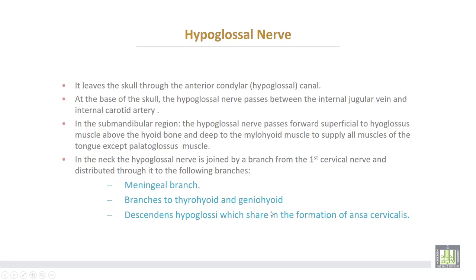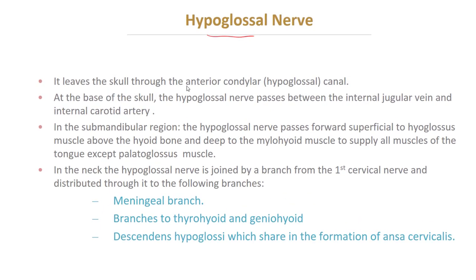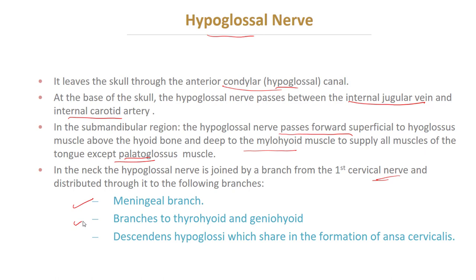The hypoglossal nerve is the twelfth cranial nerve. It leaves the skull through the anterior condylar canal, or hypoglossal canal. At the base of the skull, it passes between the internal jugular vein and the internal carotid artery. In the submandibular region, the hypoglossal nerve passes forwards, superficial to the hyoglossus muscle, above the hyoid bone, and deep to the mylohyoid muscle, to supply all muscles of the tongue except the palatoglossus muscle. In the neck, the hypoglossal nerve is joined by a branch from the first cervical nerve, which is distributed through it to give a meningeal branch and branches to the thyrohyoid and geniohyoid muscles.